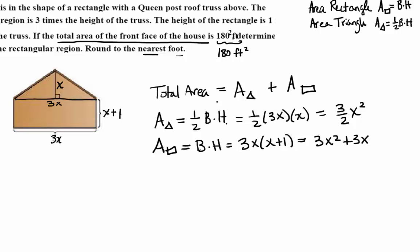Now the relationship between these that we know is that the total area is the sum of the two separate areas, the area of the triangle and the area of the rectangle. We also know that the total area is 180 square feet. So how could we use that to write an equation? 180 equals 3 halves x squared plus 3x squared plus 3x.